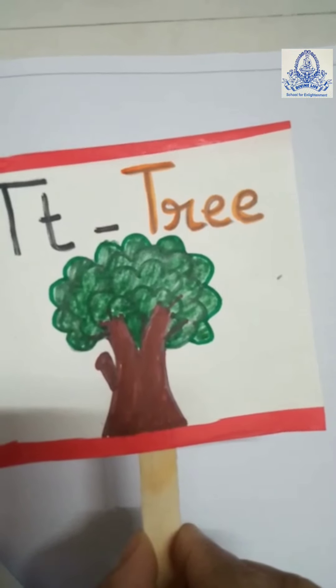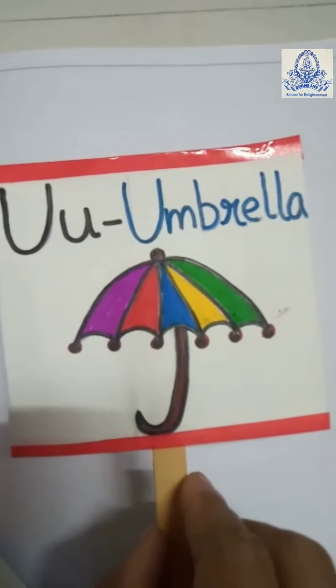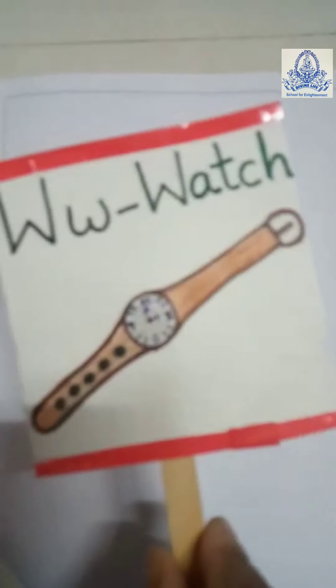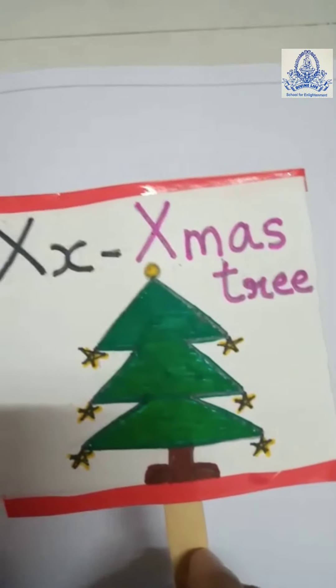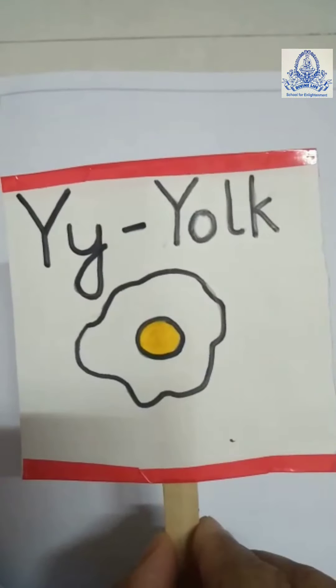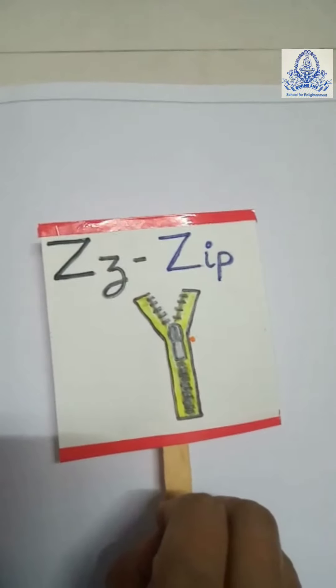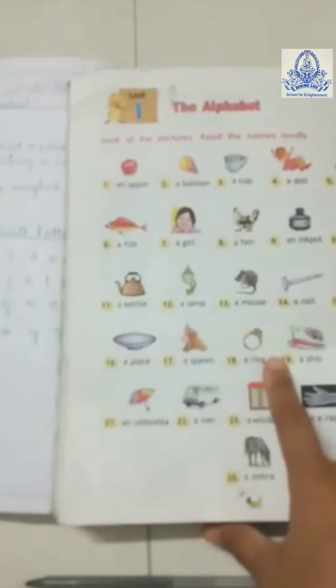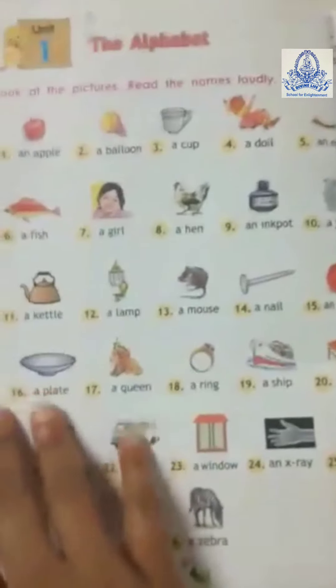S for a sun, T for a tree, U for an umbrella, V for a violin, W for a watch, X for a Christmas tree, Y for a yak, Z for a zip.